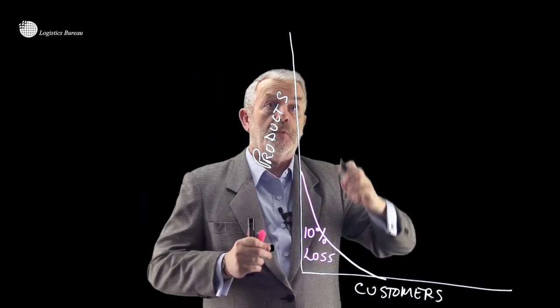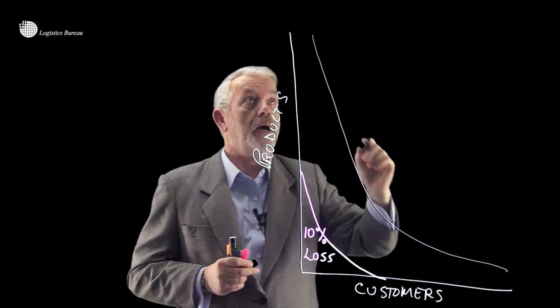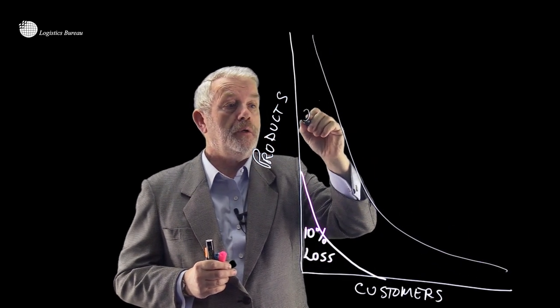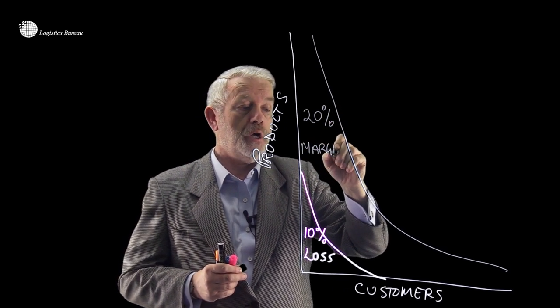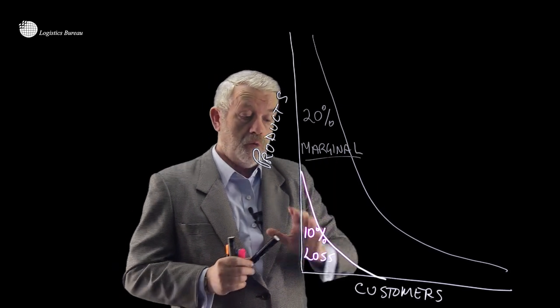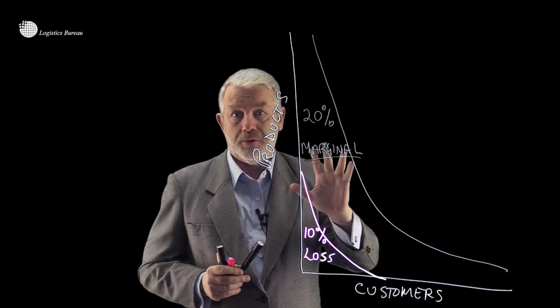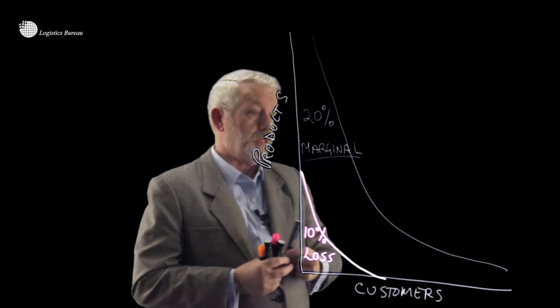You then get another big group, let's say around here, and that'll be about 20%. And these are probably marginal. So we've got 30%, which will kind of break even or worse. And then, okay, news gets a little bit better.